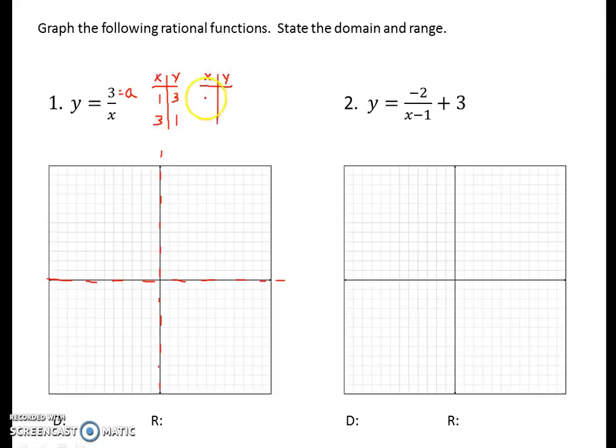Those will give me a couple of points for one branch, but I need them for the other branch as well. So I'm going to put in negative 1 for x, and 3 over negative 1 gives me negative a or negative 3. Then I'm going to use negative 3 for an input. That's my negative a, and I should get negative 1. So 3 divided by negative 3 is negative 1.